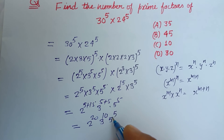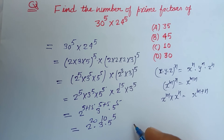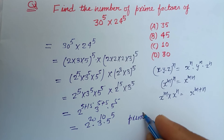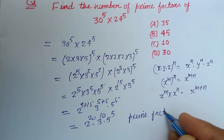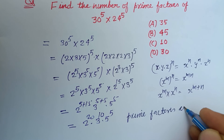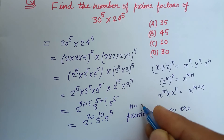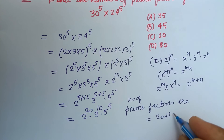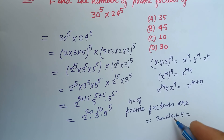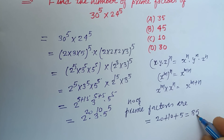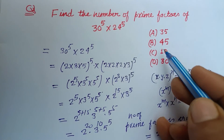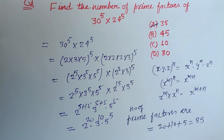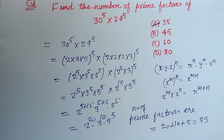The number of prime factors is 20 + 10 + 5 = 35. So the answer is 35, which corresponds to option A. I hope you got it — please like the video and subscribe to the channel. Thanks for watching.